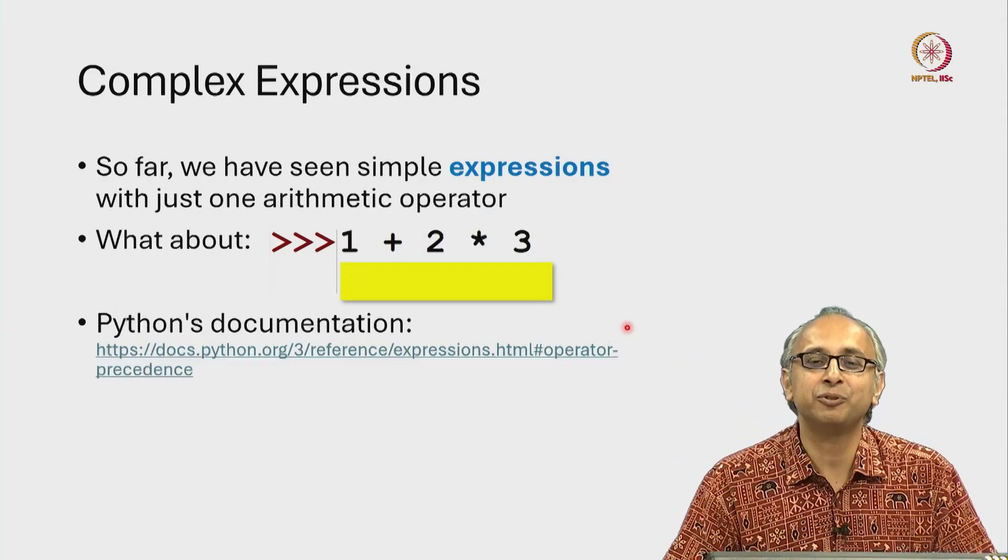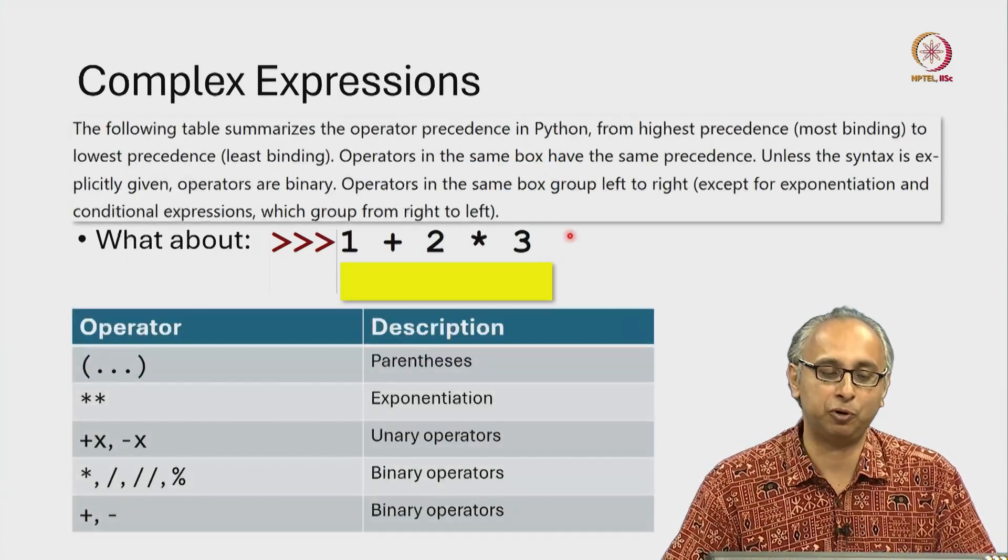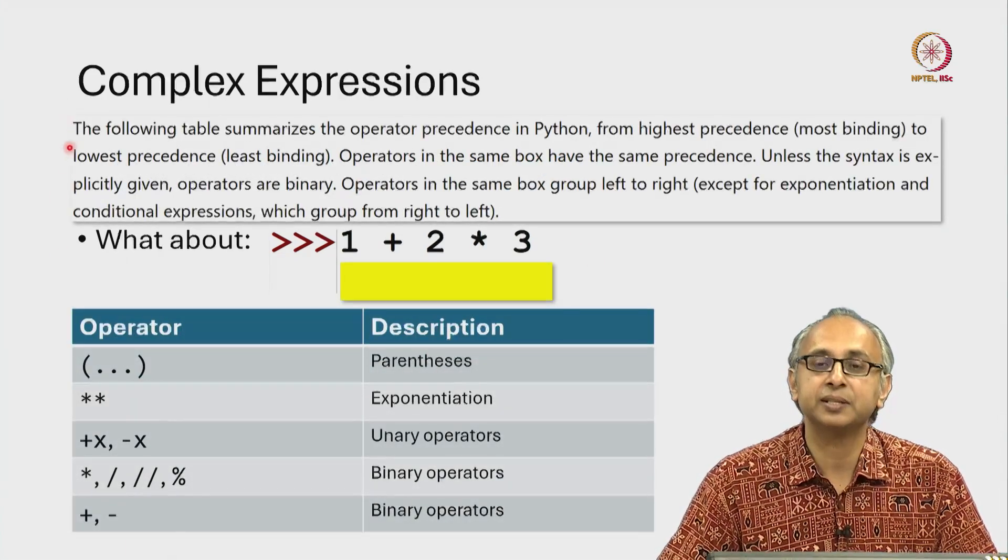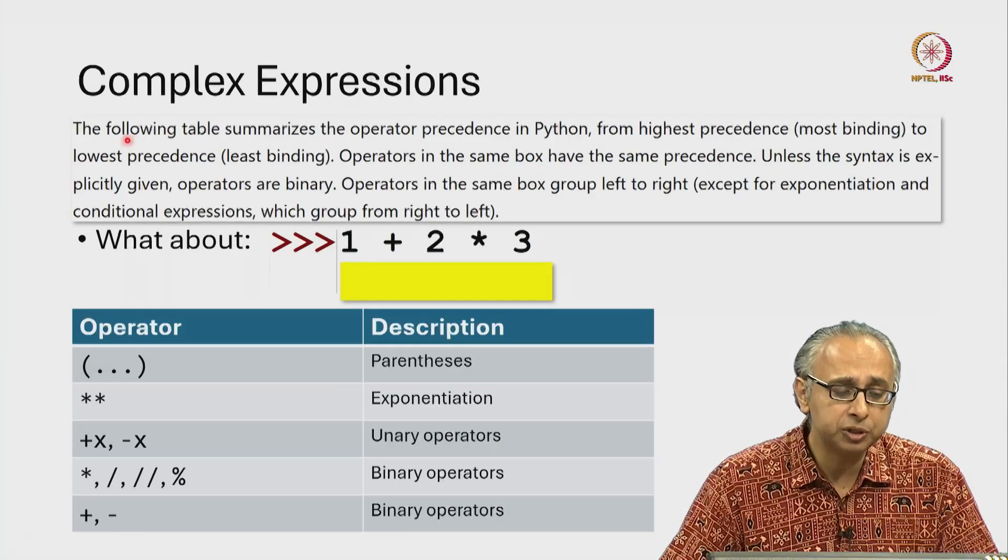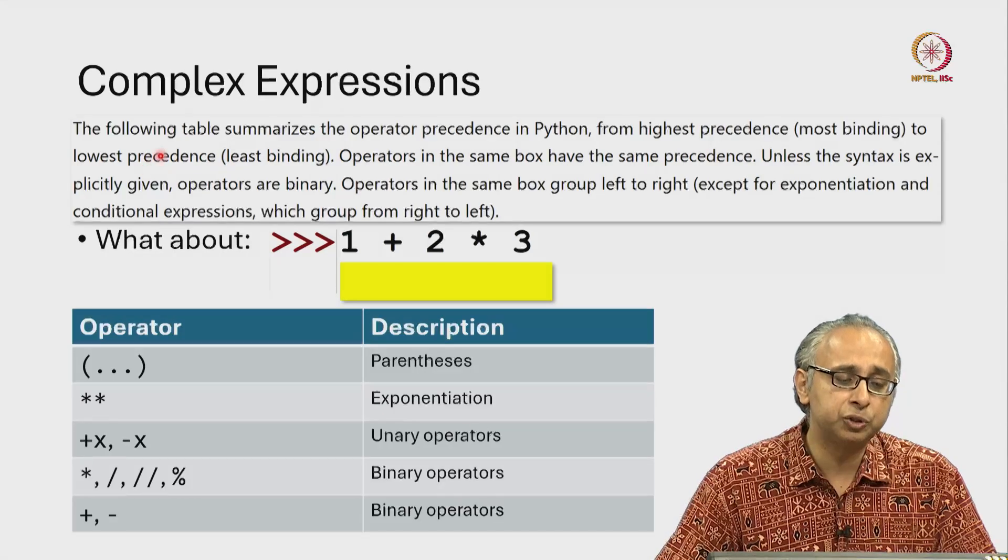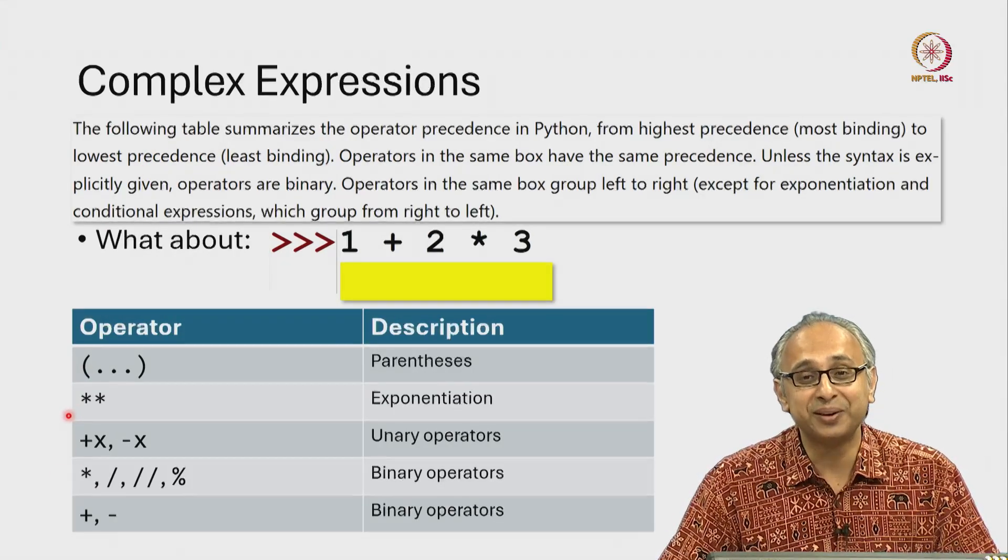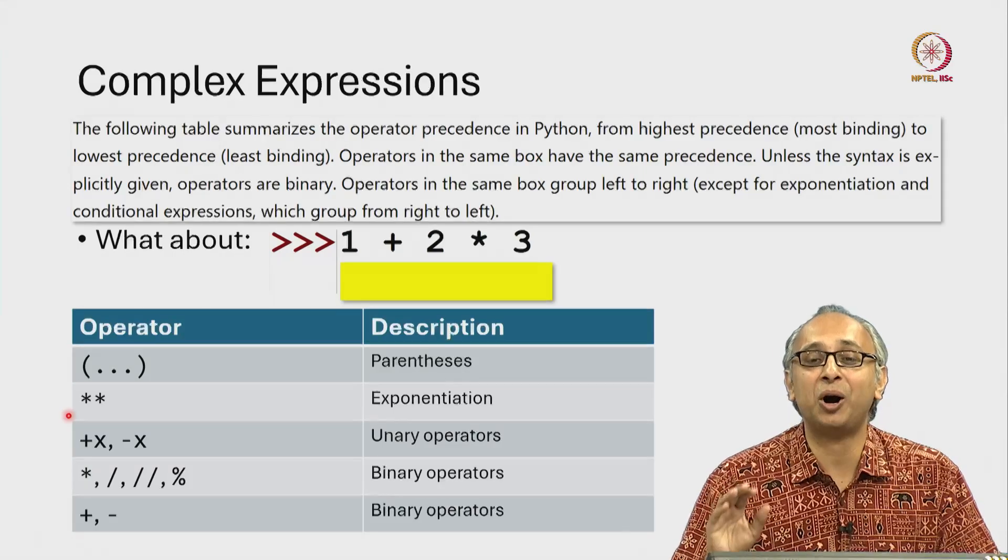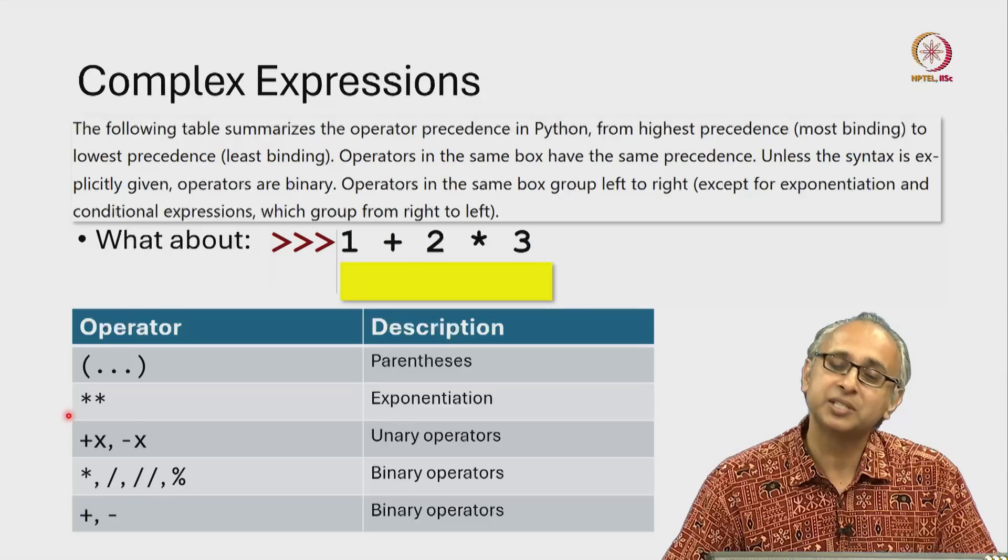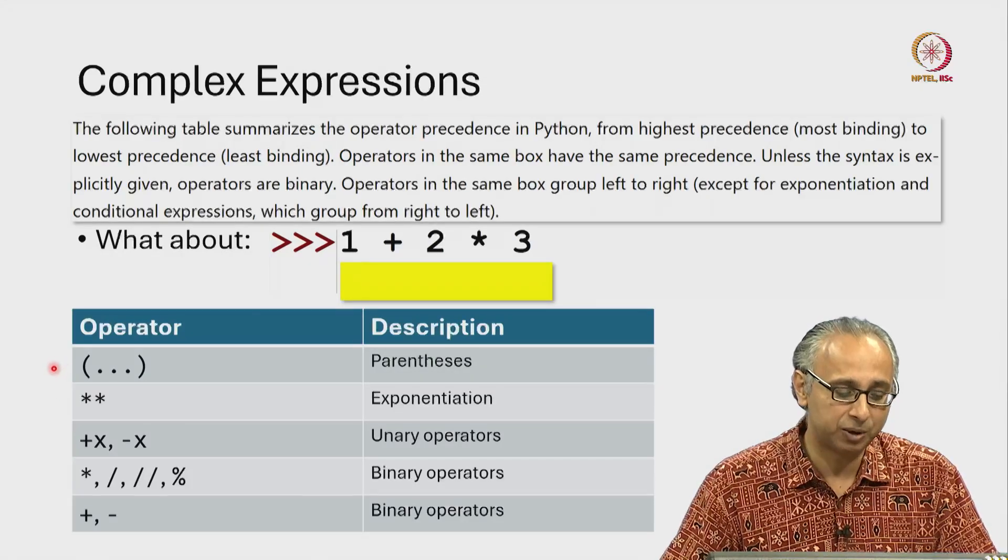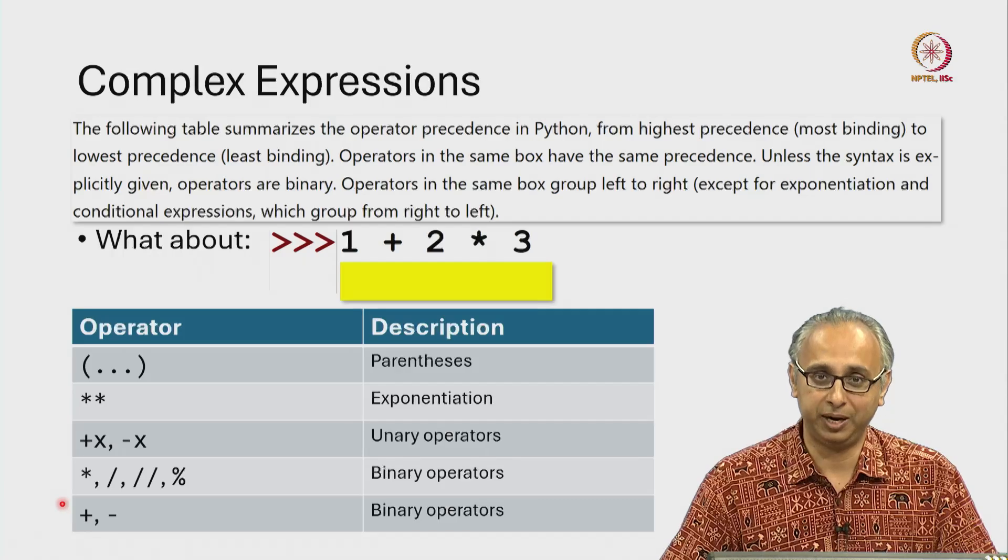Now because that information is complex, I am going to simplify it a little bit for you. There is this statement which we will read carefully together and it talks about a table. Now if you go to the link I told you, the actual table is more complicated than this because it turns out there are many, many more operators that are available to you in the Python language. Since we haven't seen many of these operators, I have simplified the table for our understanding.